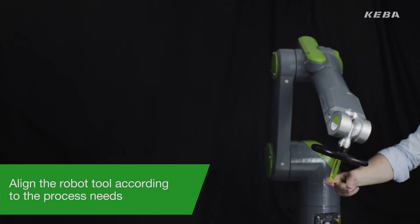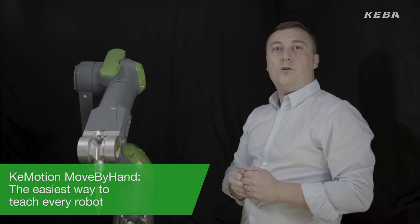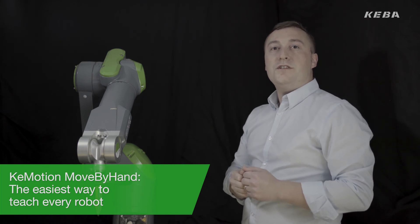A very simple robot movement without expert knowledge is possible. K-Motion Move by Hand is one of many high-performance robot technologies that makes automation easier.